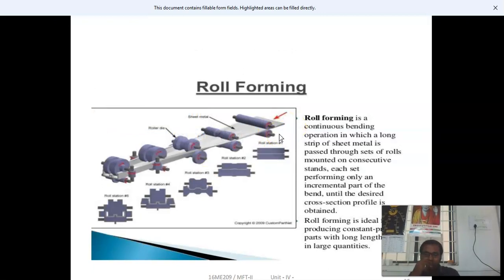Next, we discuss roll forming, a continuous bending operation in which a long strip of sheet metal is passed through sets of rolls mounted on consecutive stands. Each set performs an incremental part of the bend until the desired cross-section profile is obtained. Roll forming is ideal for producing constant profile parts with long lengths in large quantities.